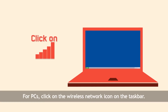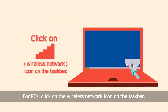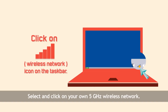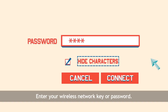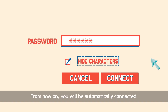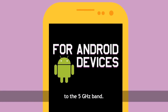For PCs, click on the wireless network icon on the taskbar. Select and click on your own 5GHz wireless network. Enter your wireless network key or password. From now on, you will be automatically connected to the 5GHz band.